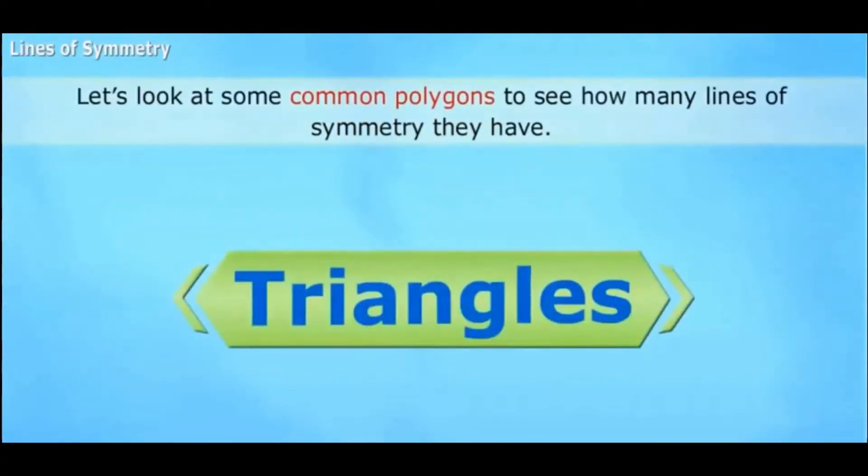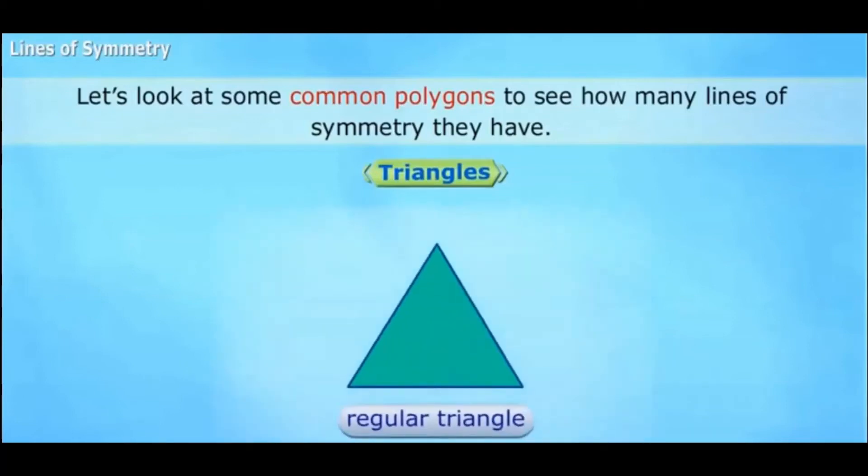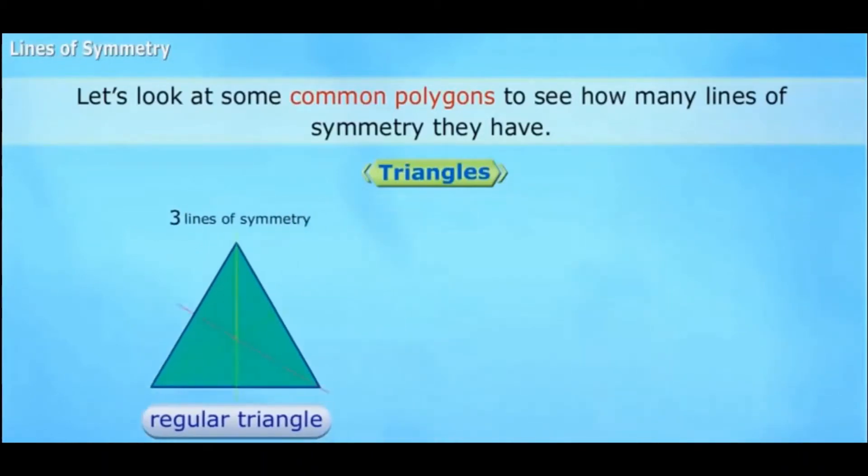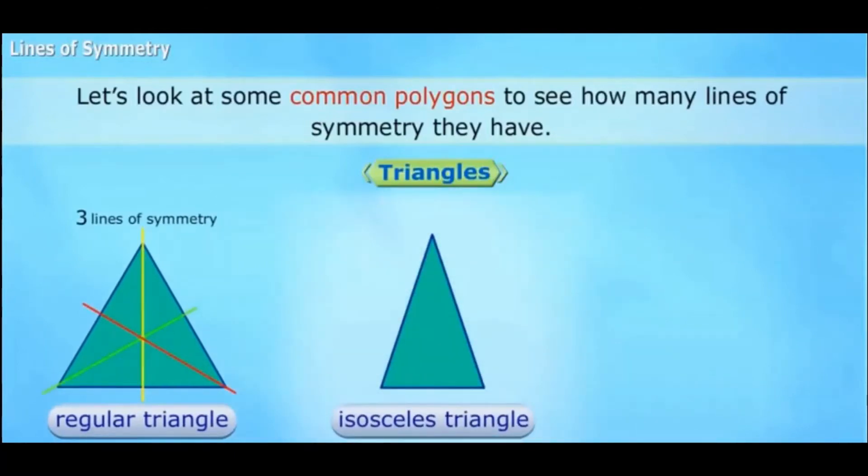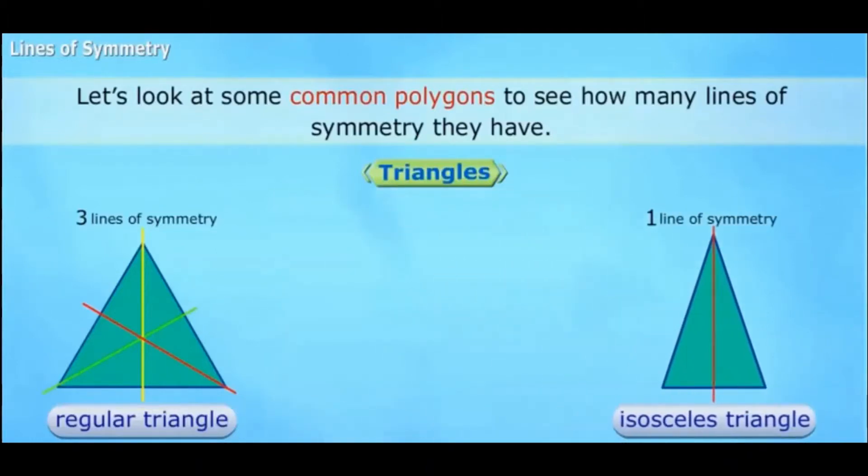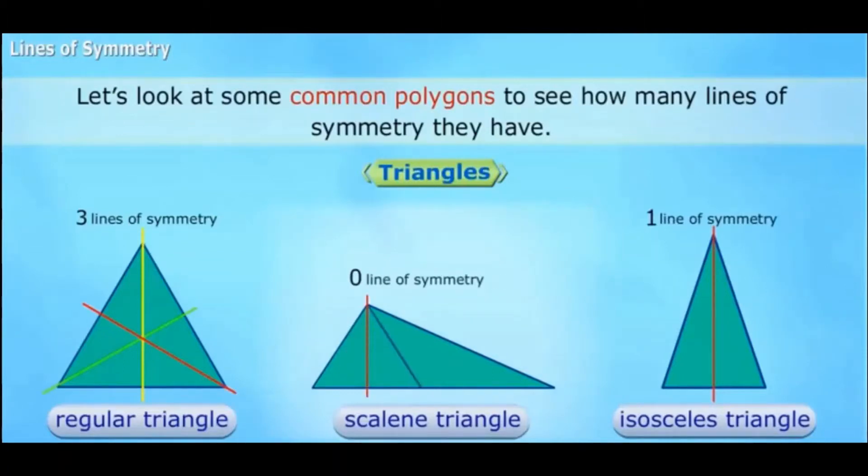A regular triangle, also called equilateral triangle, has three lines of symmetry because it can be folded along each of three lines and line up perfectly. An isosceles triangle where two sides are equal has only one line of symmetry because it has only one line on which it can be perfectly folded. A scalene triangle has no lines of symmetry.